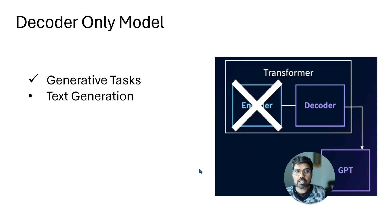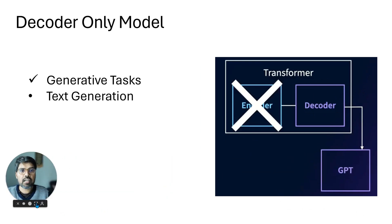Then we have decoder-only models. Decoder-only models mainly do generation tasks—text generation and such. Examples include ChatGPT and GPT-3.